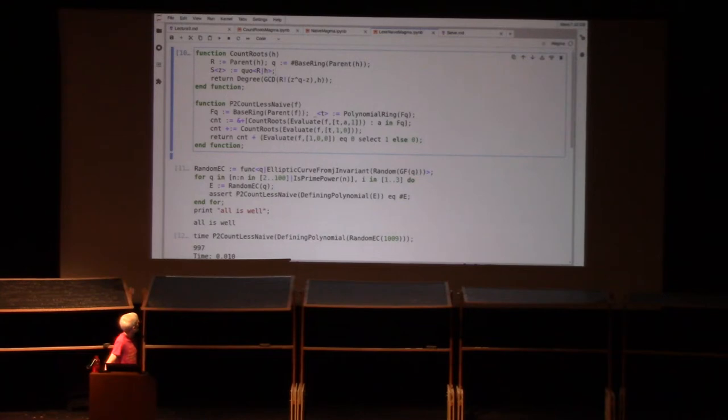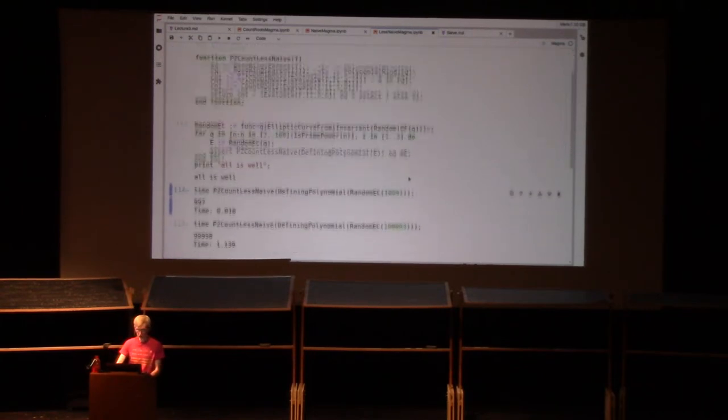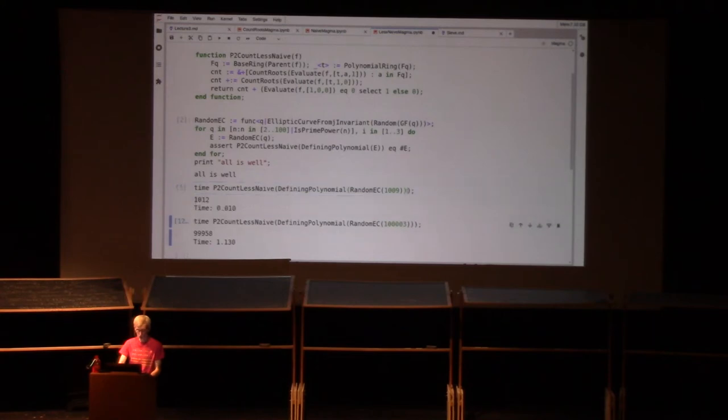And then we'll do it again to just count the roots of the single polynomial we get when we plug 1 in for Y and 0 in for Z. And then finally, we add the final check for the potentially one or zero rational points when we plug in 1, 0, 0. We can again check that this works and we can compare its performance to our naive approach. Our less naive approach is a lot faster. We could even go up to say 100,000. It takes about a second. Again, you're never going to use this algorithm when q is that big. You'd use other better algorithms that we're going to get to in a moment. I just want to show you something for a comparison.